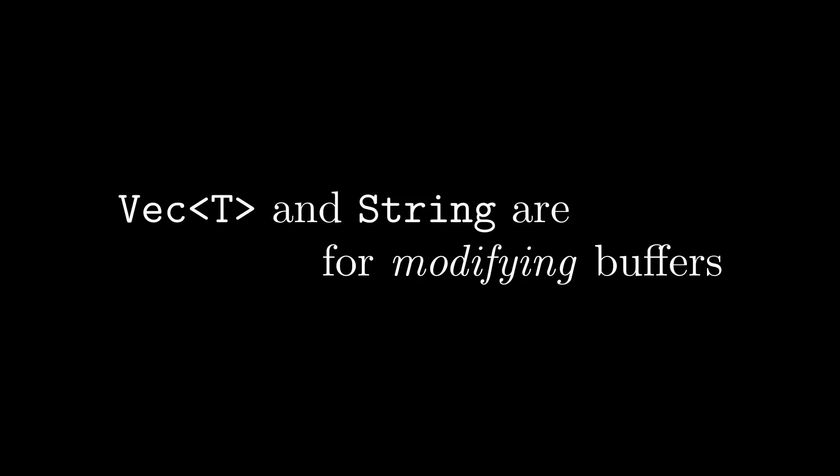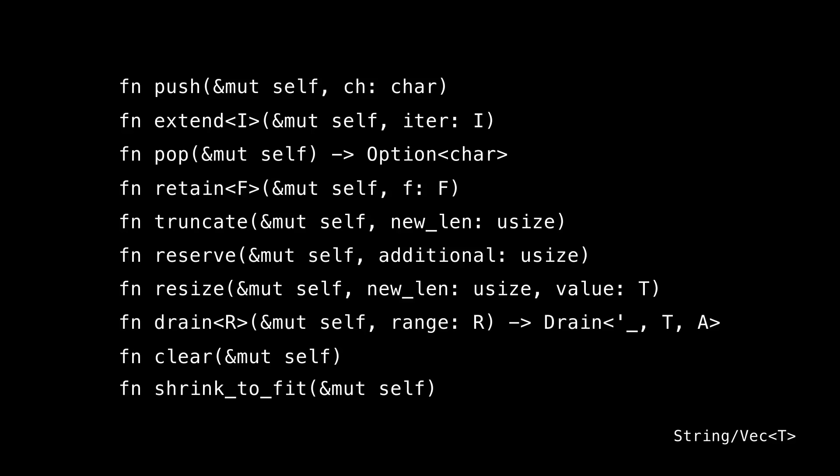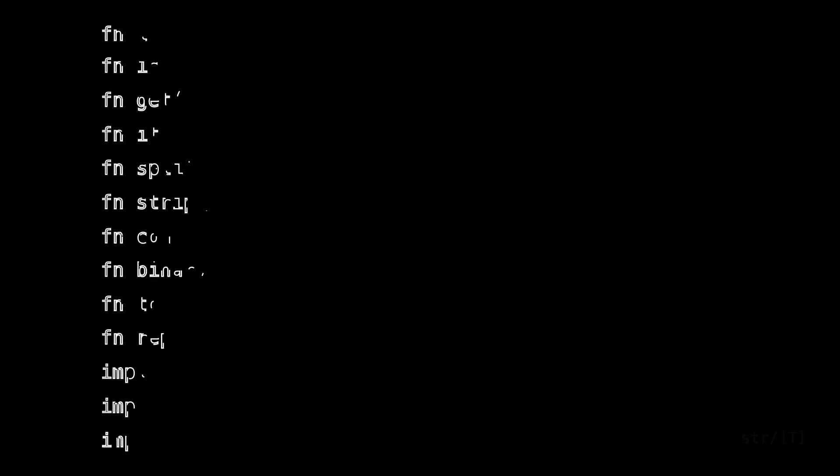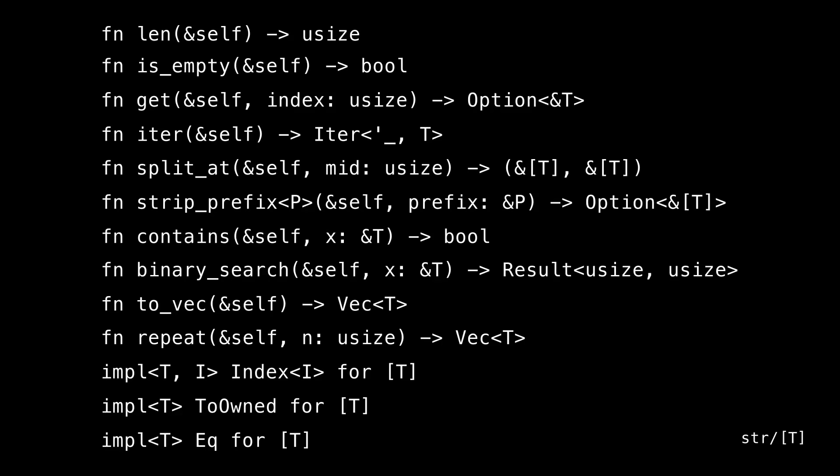The key takeaway: Vec and String are for modifying buffers — pushing, popping, extending, truncating. If you don't need that, don't use them, because they carry extra cost. All the interesting methods on Vec and String take &mut self — they're all about mutating the buffer. If you just need to read data — check length, check emptiness, index into it, iterate, split, search — all of that is provided directly by str and slice<T>, both of which you can get at easily through an Arc. You can gain a lot of performance by not paying for String and Vec when you don't need them.